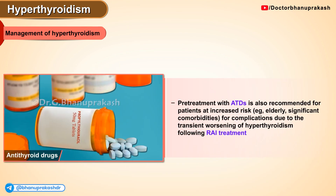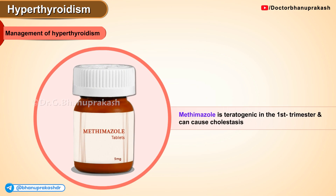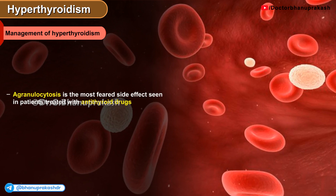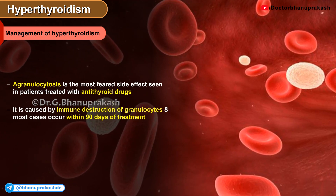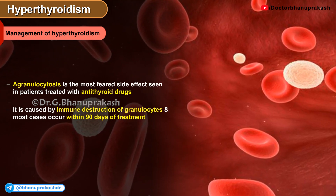Pretreatment with antithyroid drugs is also recommended for patients at increased risk for complications due to transient worsening of hyperthyroidism following radioactive iodine ablation treatment. Methimazole is teratogenic in the first trimester and can cause cholestasis, whereas propylthiouracil can cause hepatic failure and ANCA-associated vasculitis. However, agranulocytosis is the most feared side effect seen in patients treated with antithyroid drugs. It is caused by immune destruction of granulocytes and most cases occur within the first 90 days of treatment.